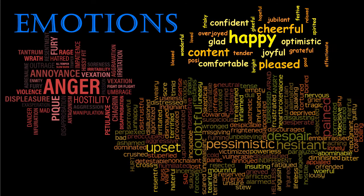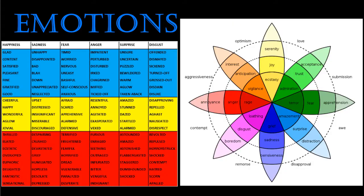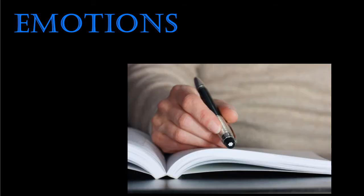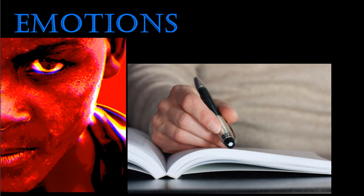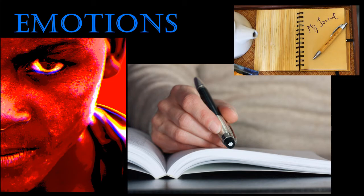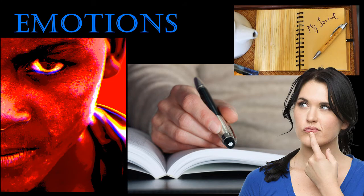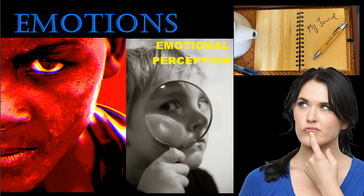Regardless of the actual number of different emotions there are, increasing your vocabulary of emotions will allow you to more accurately describe the feelings that you and others are experiencing. Emotion charts and models such as the Wheel of Emotions can help to improve your emotional vocabulary. It may help to refer to these tools when you are experiencing different emotions, especially strong ones. Recording your feelings in a journal can help you to better understand emotions, both yours and others, and will certainly improve your skills of emotional perception.